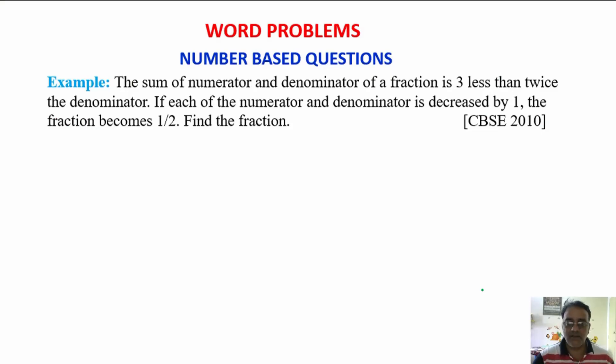So, this is the question based on fraction. The sum of numerator and denominator of a fraction is 3 less than twice the denominator.